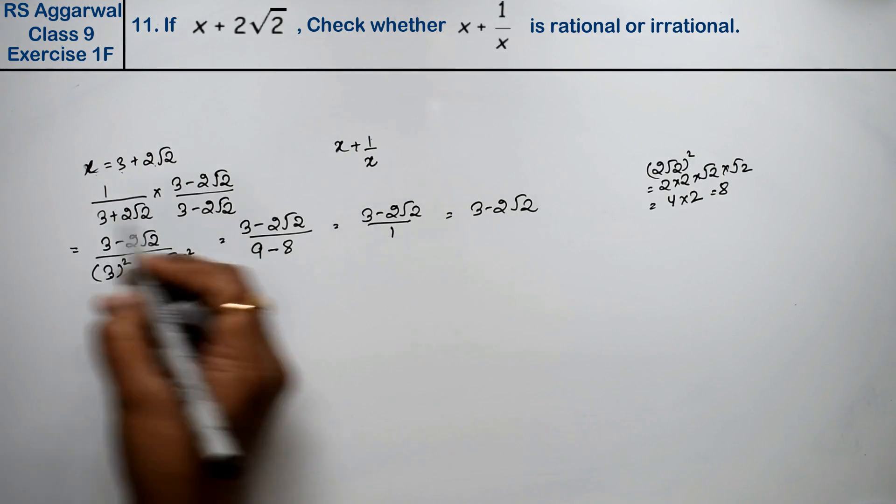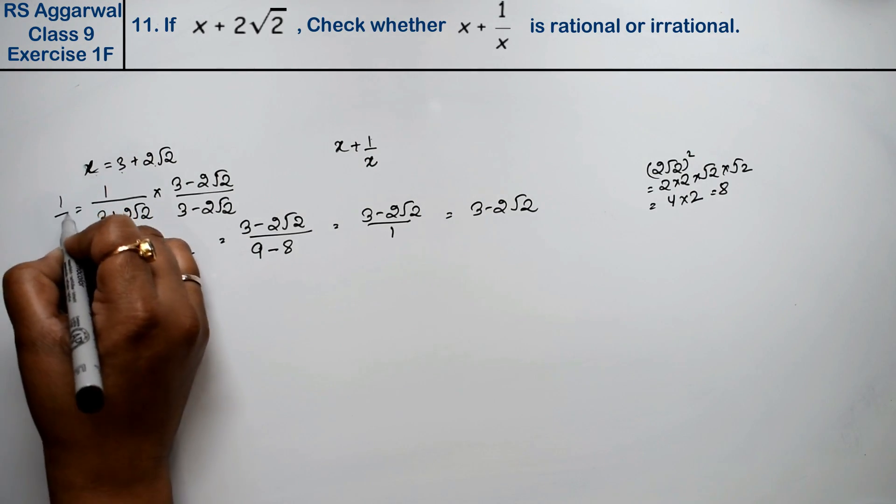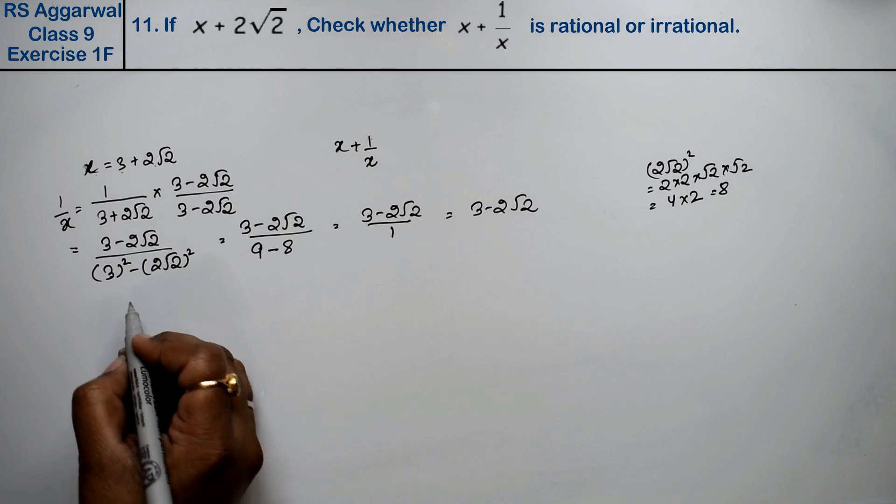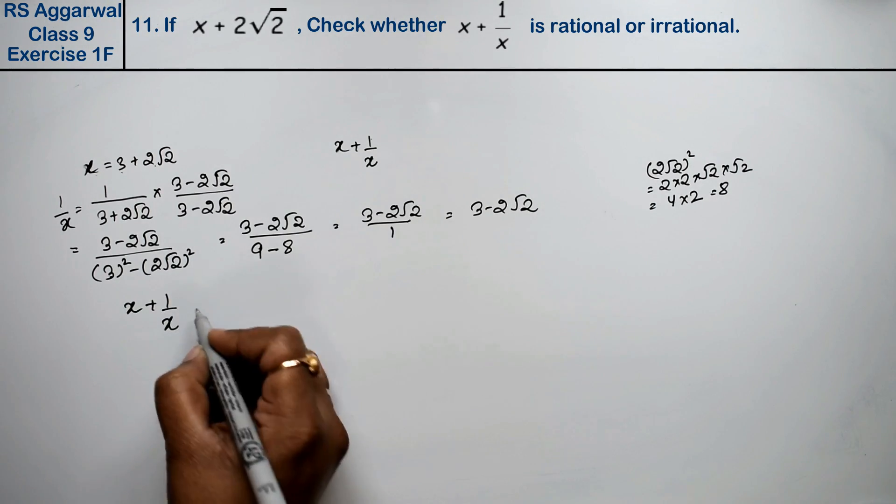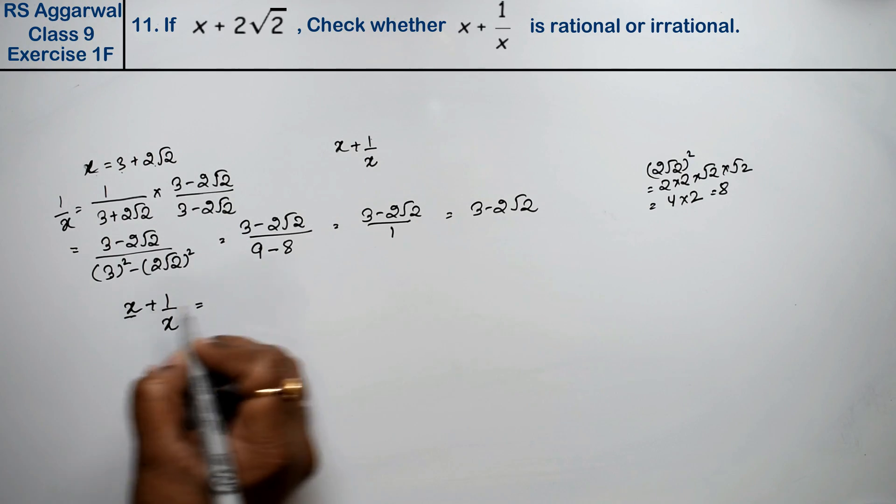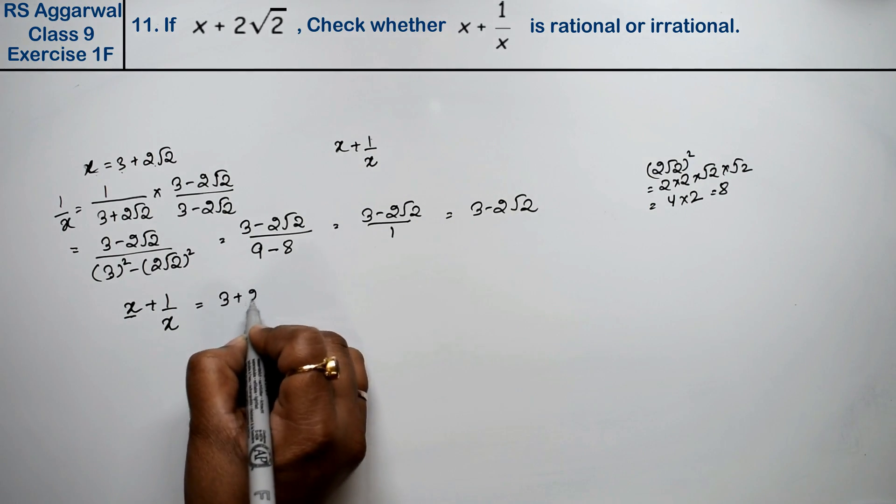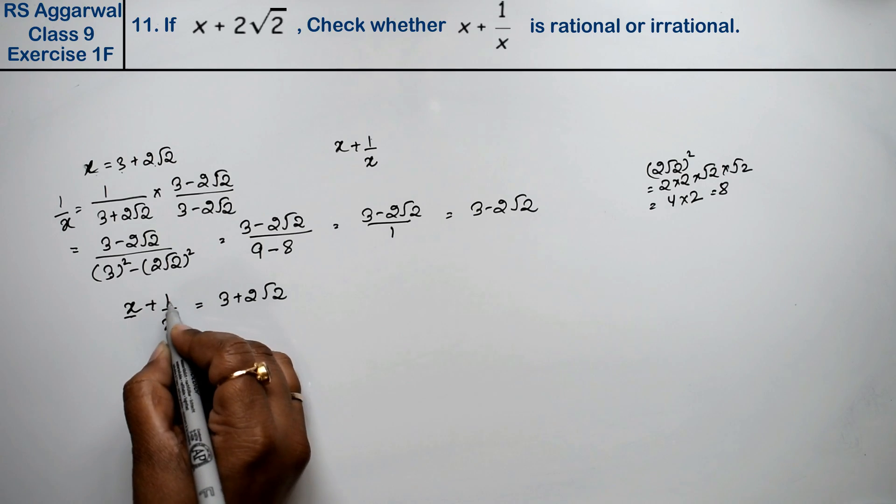Now this is our value which is 1 upon x value. Now we have to show that x plus 1 upon x is rational or irrational. So what was x value? 3 plus 2 root 2, and what was 1 upon x value?